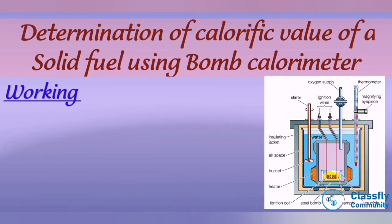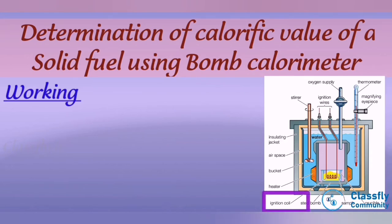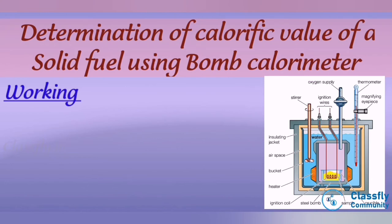Working: a known mass of solid fuel is placed in a crucible. The crucible is placed inside the bomb, and the lid is closed tightly. The bomb is placed inside the copper calorimeter with a known mass of water. The bomb is filled with oxygen at a pressure of 25 to 30 atmospheres. The initial temperature T1 is noted on the thermometer. On passing an electric current through the ignition coil, the fuel gets ignited and burns, liberating heat. The water is continuously stirred using the stirrer, and the maximum temperature attained by the water, T2, is noted.